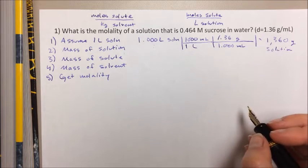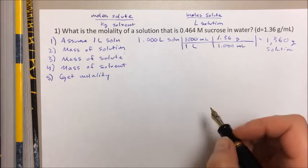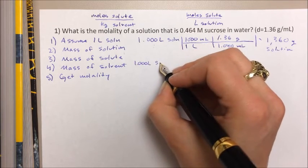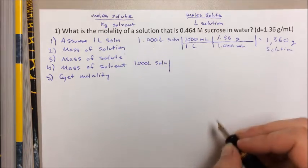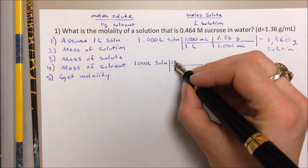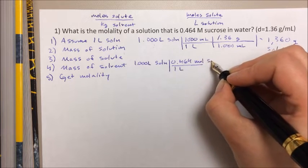But now I want to know how much of that solution is made up of the solute. Well, if we're assuming that we have one liter of solution, we know from the molarity that one liter of that solution is 0.464 moles of the sucrose.